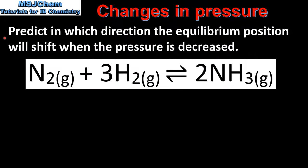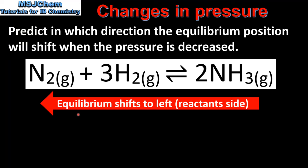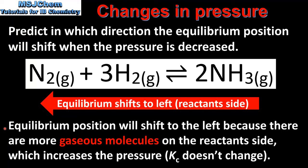In the next example we will predict in which direction the equilibrium position will shift when the pressure is decreased. When the pressure is decreased, the equilibrium position shifts to the left, which is the reactant side, because there are more gaseous molecules on the reactant side, which increases the pressure. And once again, the value of Kc does not change.